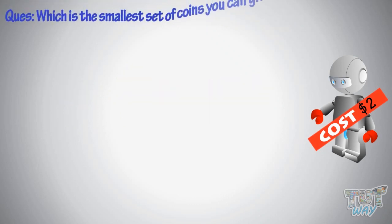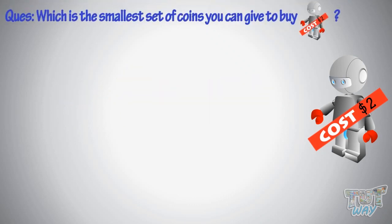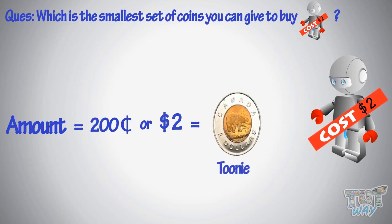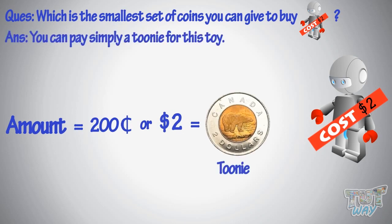Now, which is the smallest set of coins you can give to buy this toy? The amount is equal to 200 cents, or $2, which is equal to a toonie. So you can simply pay a toonie for this.